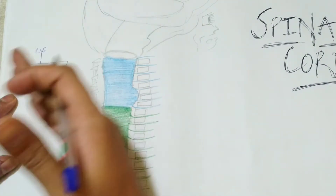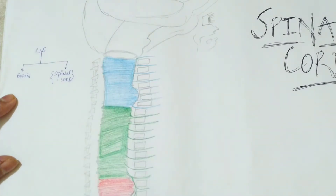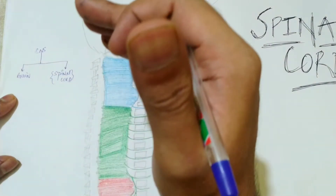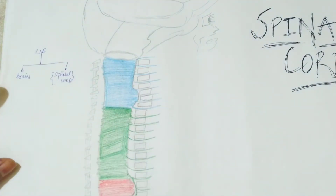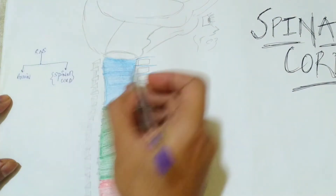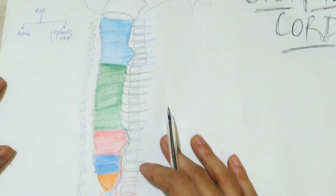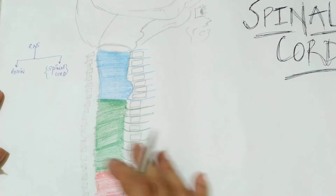The spinal cord is just a passageway for signals coming from and going to the brain. It is a part of the CNS — this is your brain and this is your spinal cord.